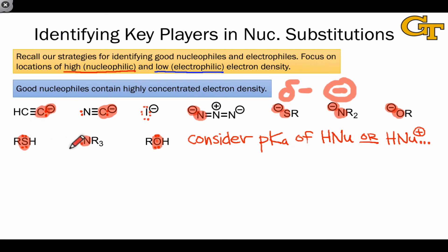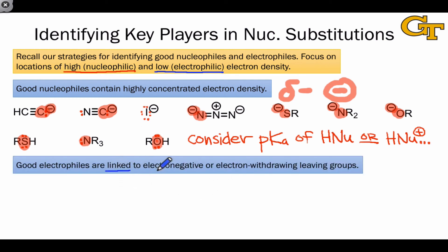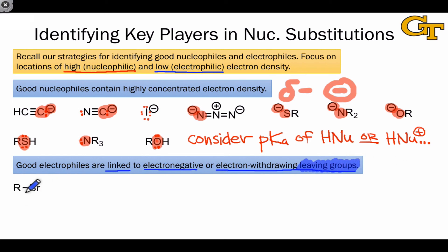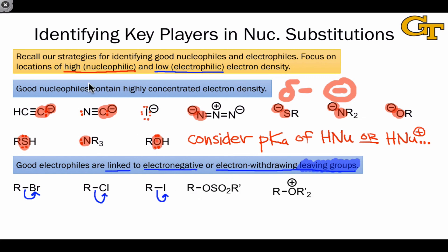Good electrophiles are linked to highly electronegative or electron-withdrawing atoms or groups, and we refer to these linked groups as leaving groups or nucleofuges. Because these groups pull electron density towards themselves, they leave whatever they're connected to with a partial positive charge — the characteristic of a good electrophile. In identifying electrophiles, we focus our attention on the leaving group. While technically R in this structure is the electrophile, we identify it as such by noting that what it's connected to — the bromine atom — wants to depart with a pair of electrons. Alkyl halides and other functional groups involving heavy atoms connected to bromine, chlorine, or iodine are classic electrophiles in nucleophilic substitution reactions, but other players can come in here as well.